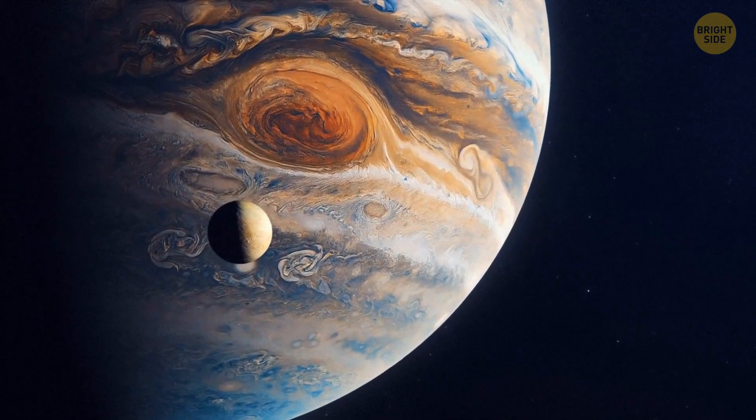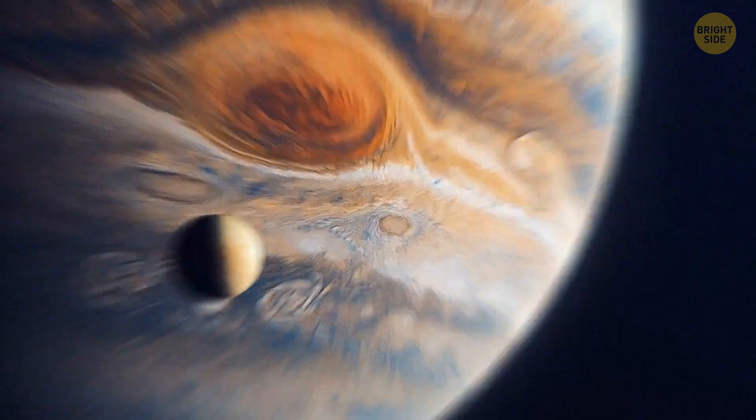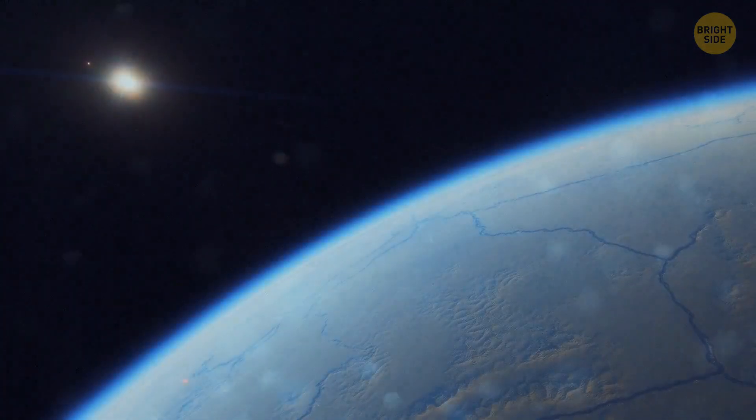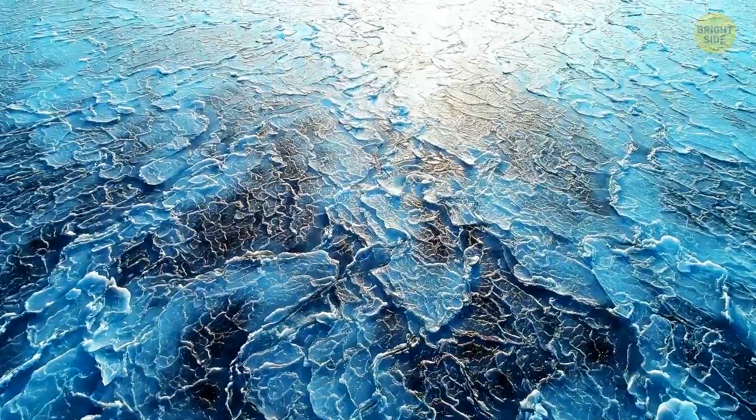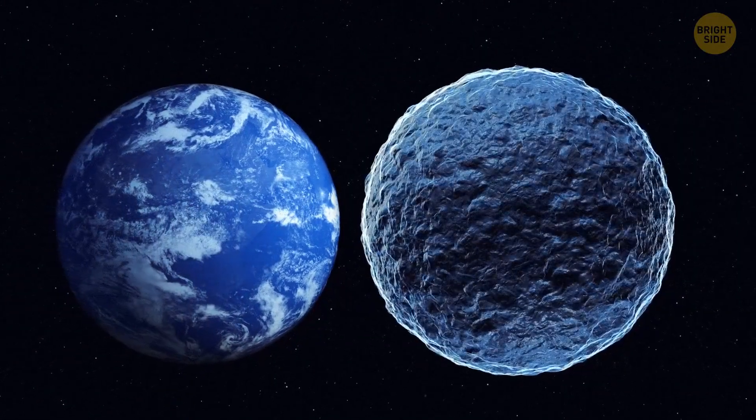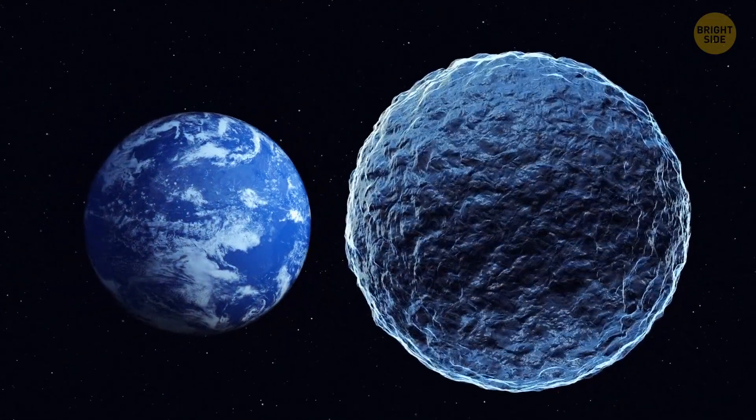Europa, Jupiter's moon, has some water too. This is the most likely candidate we know about to host life outside Earth. There's probably a whole ocean of liquid water under its frozen surface. It might actually contain twice as much water as all of Earth's oceans combined.